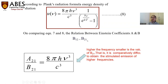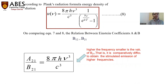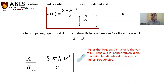The result states that B12 equals B21 — the Einstein coefficient for absorption equals the Einstein coefficient for stimulated emission. We also get that A21/B21 — the ratio of the Einstein coefficient for spontaneous emission to the Einstein coefficient for stimulated emission — equals 8πhν³/c³, meaning it is proportional to ν³. Higher the frequency, smaller is the value of B21.